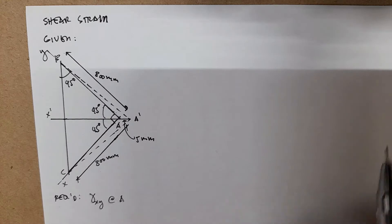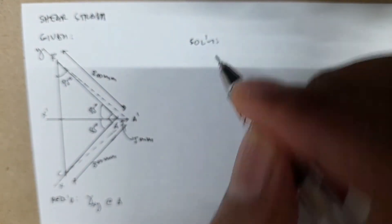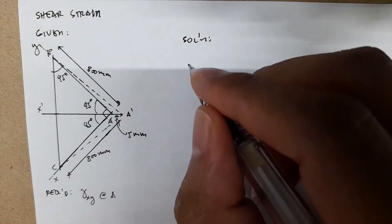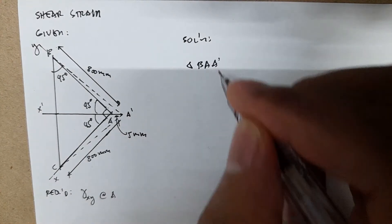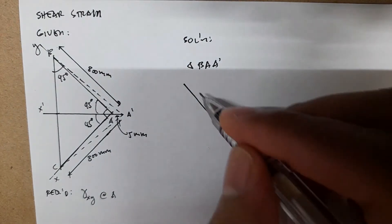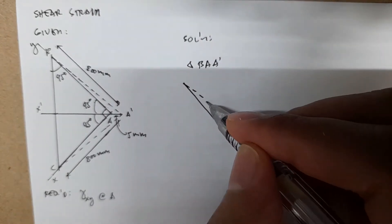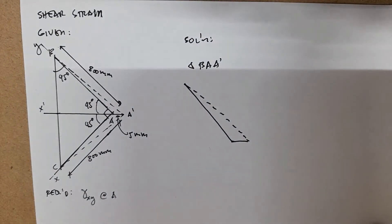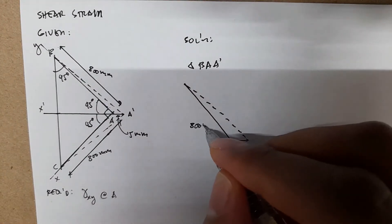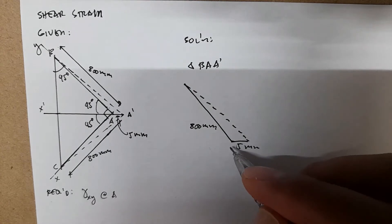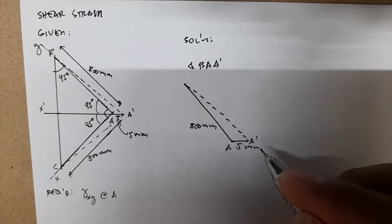To solve this, we're going to isolate the triangle BAA prime — just this one. Then you have the 5mm displacement, and then you have the dashed line, which is the new side of the triangle. So this side is 800mm, this one is 5mm, this one is angle A, and then you have point A prime and point B.